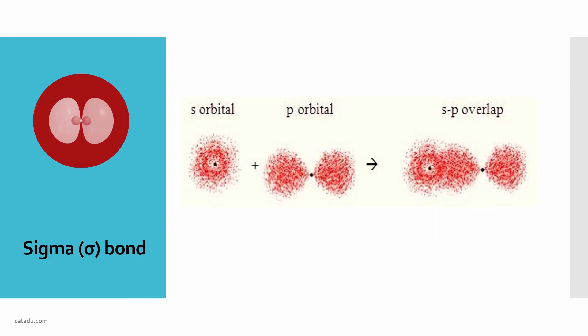The sigma bond is stronger than other covalent bonds. This is direct overlapping. Any type of single bond means sigma bond is there.